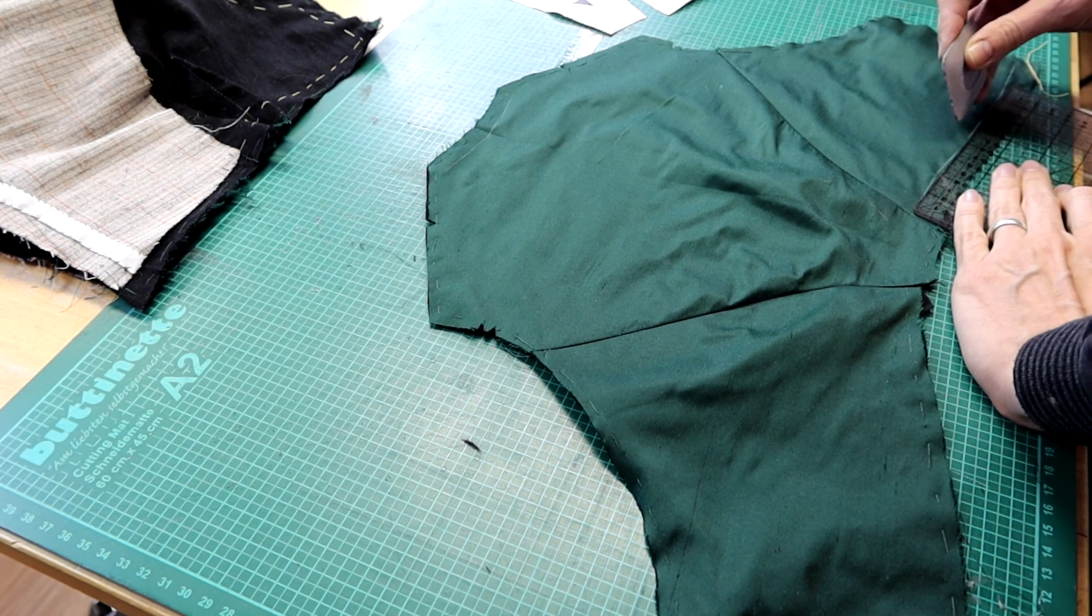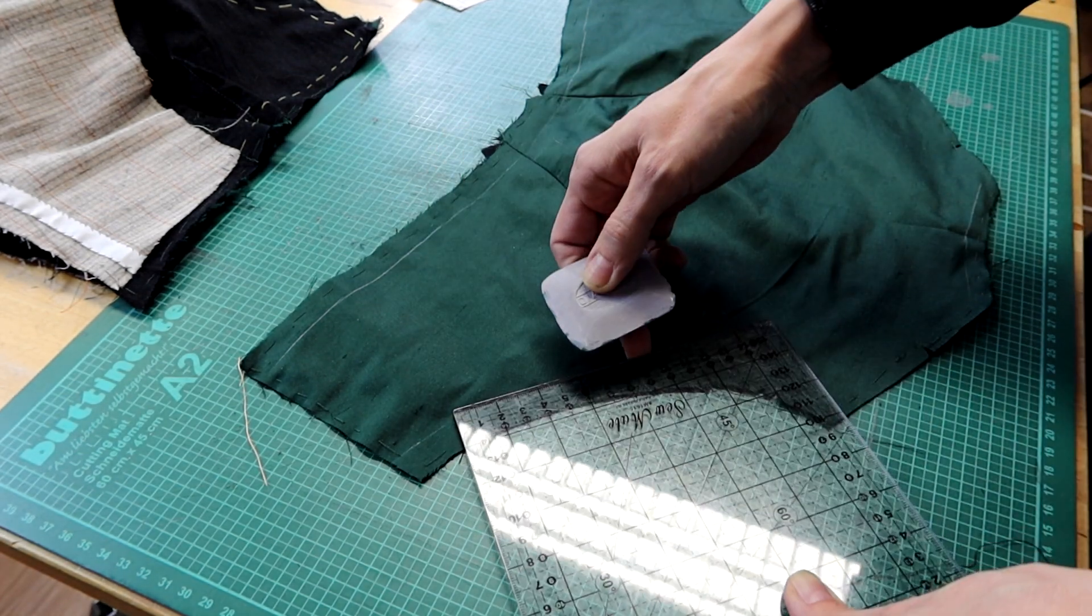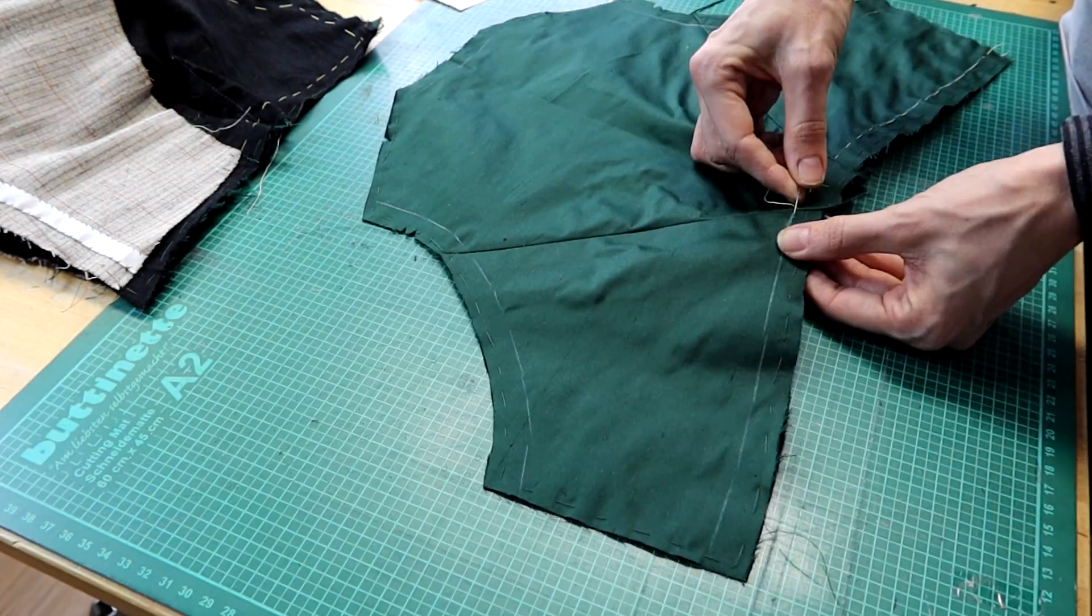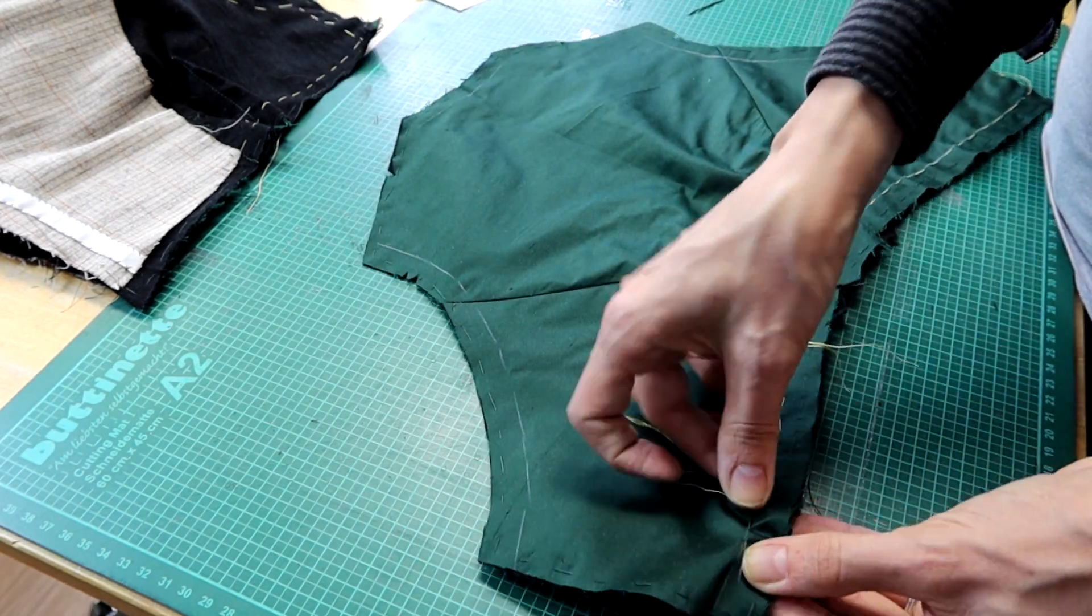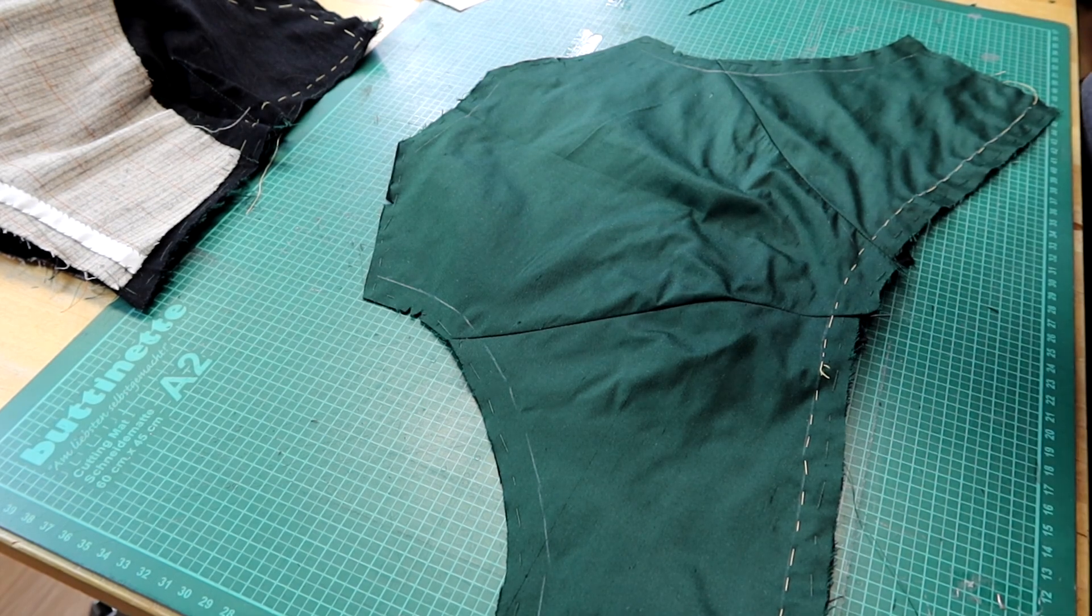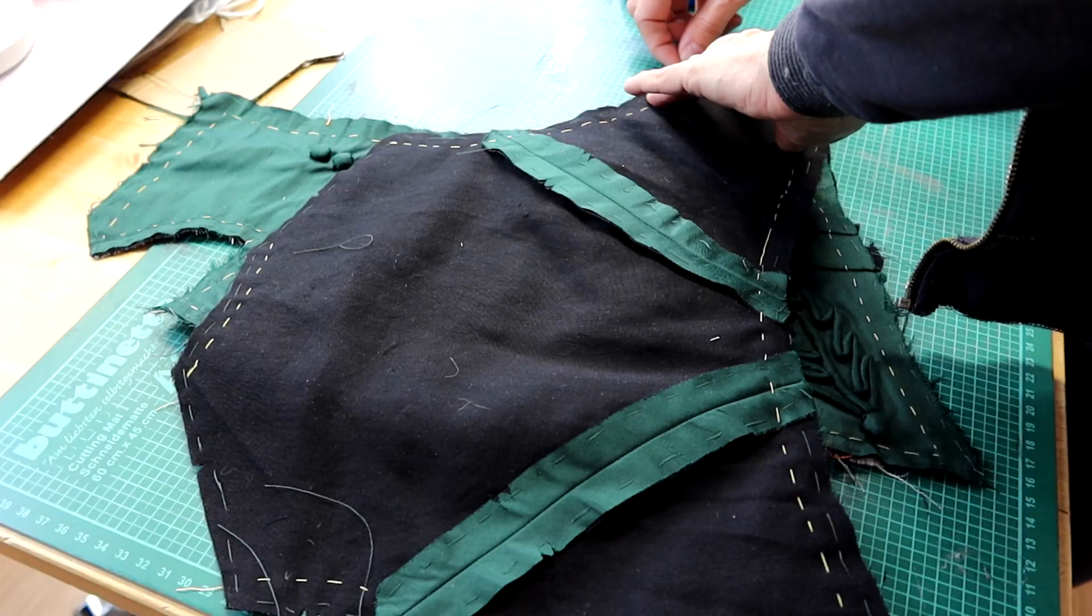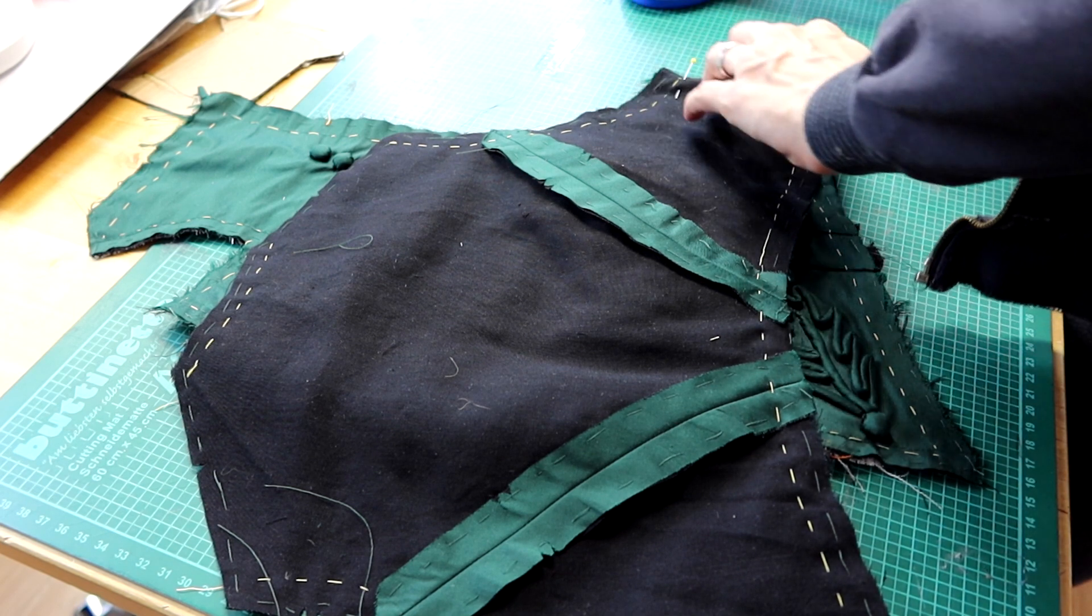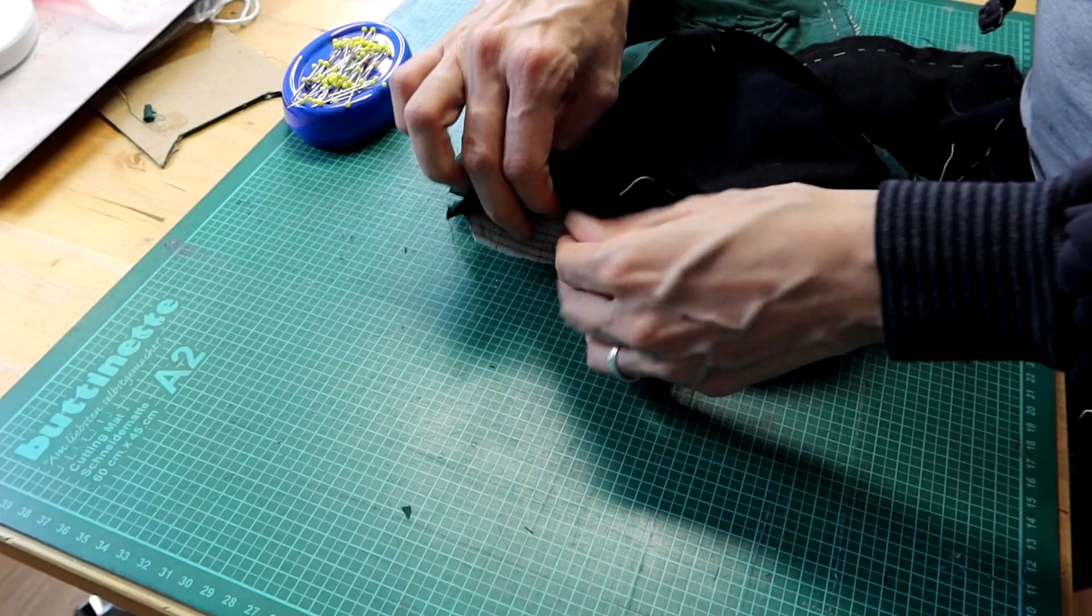I marked all the seam allowances and then I went over that with thread tracing. I also closed the side seams and the shoulder seams. The horsehair layer wasn't sewn into the shoulder seams but basted over the seam.